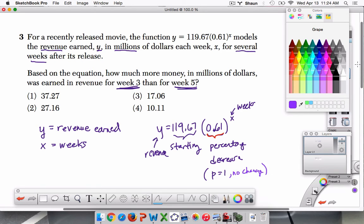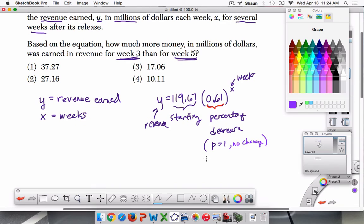What else could happen? Well, if p is greater than one, then there's a percent increase. So like you see 1.5, for example, I mean a 50% increase. And then here, p is less than one, which is our case, you have a percent decrease.